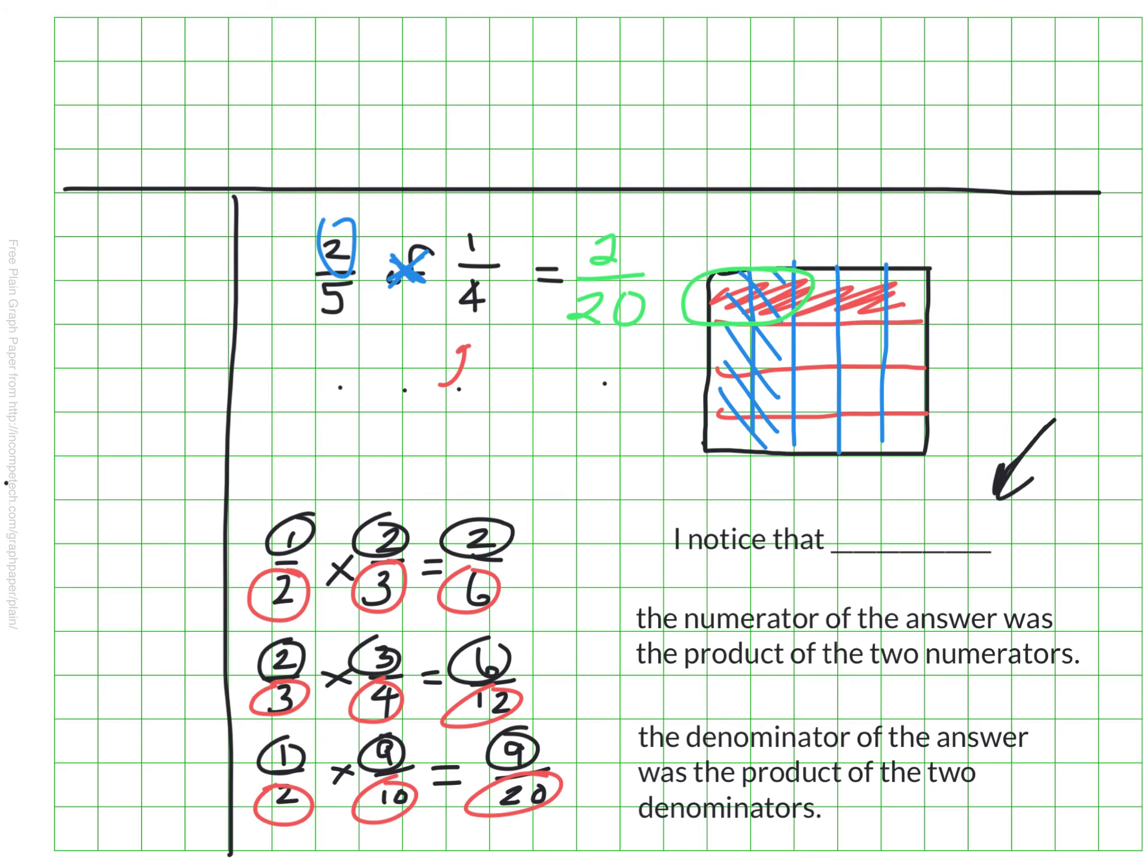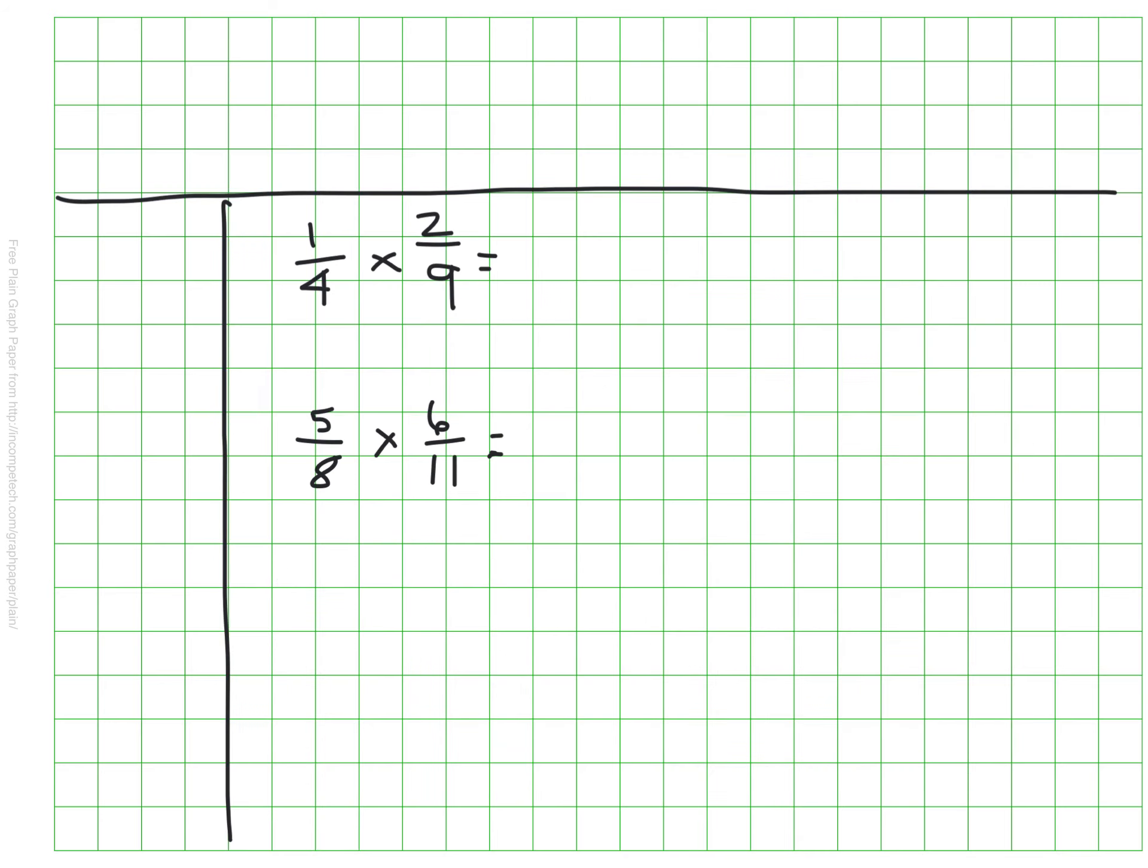Let's apply this algorithm on just a couple more examples. Use the algorithm that we just shared on these examples, on these number sentences, to complete them with the answer. So one-fourth of two-ninths, five-eighths of six-elevenths. Take a minute and solve the problems. And when you're ready, unpause the video.